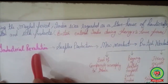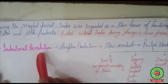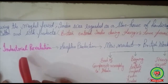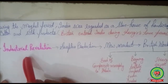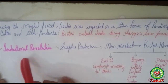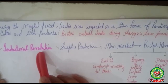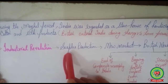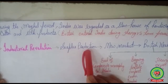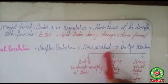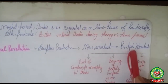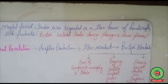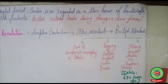Industrial Revolution took place in England — the transformation of the production system from the domestic system of production to the factory system of production. The Industrial Revolution led to an abundance of production, surplus production, in England. So British merchants were looking for new markets and put forward some demands before the British Parliament.